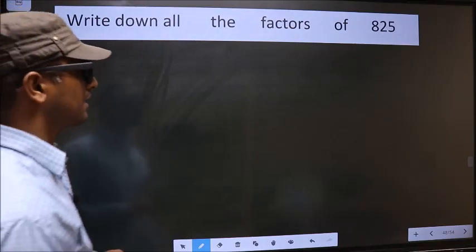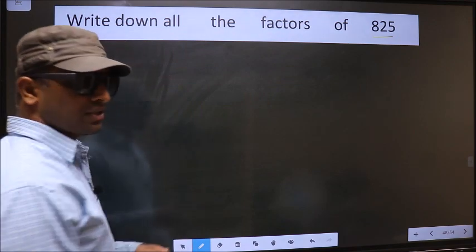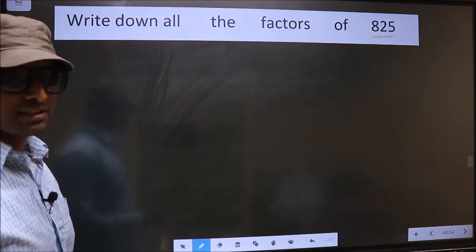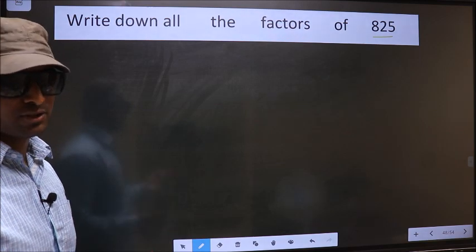Write down all the factors of 825. To write all the factors, first we should do the prime factorization of it. So let us do.